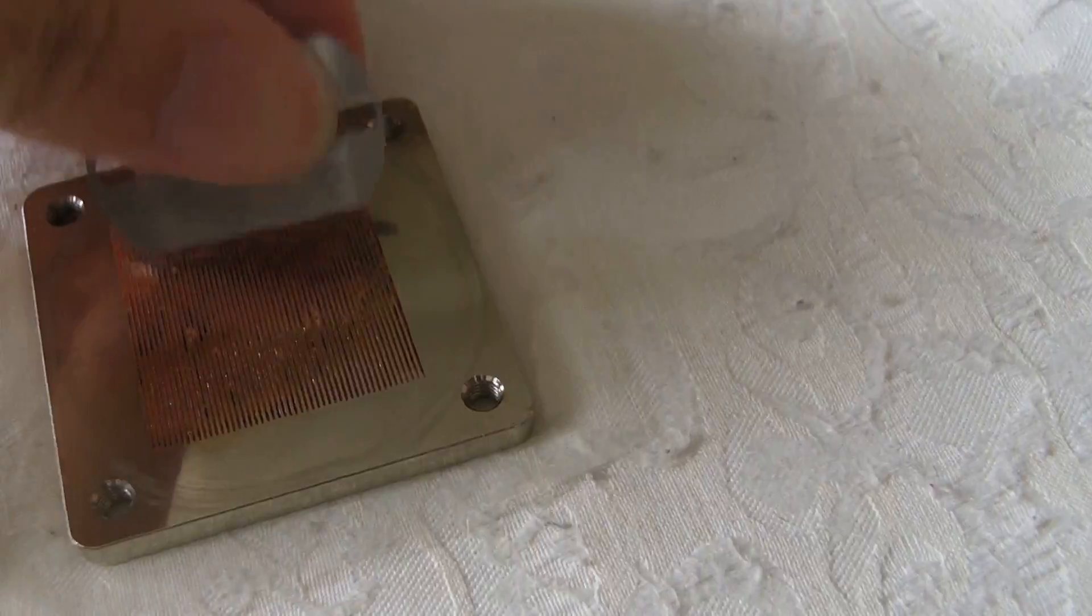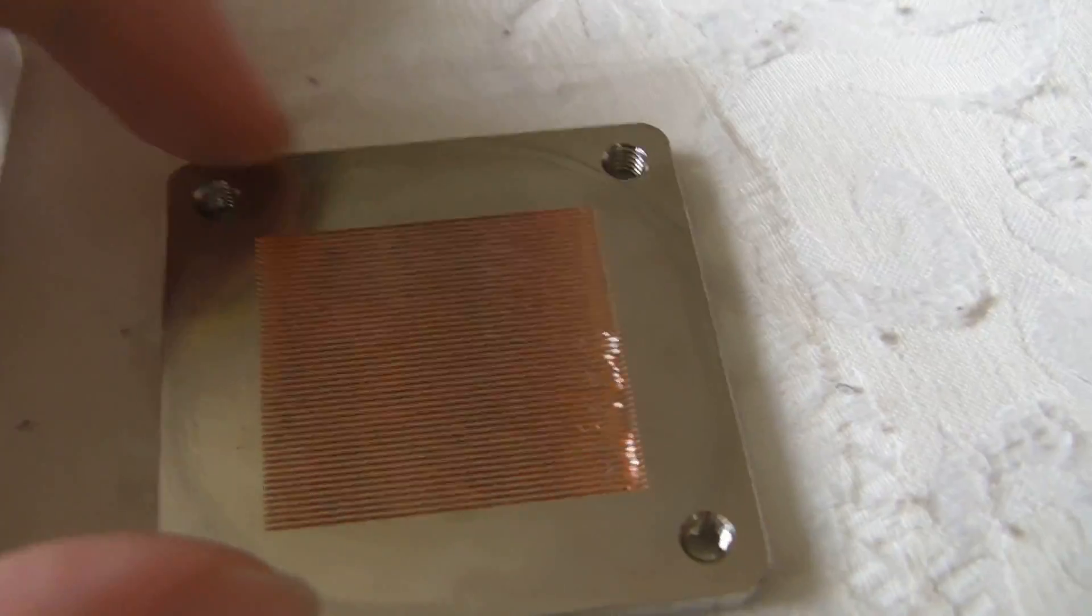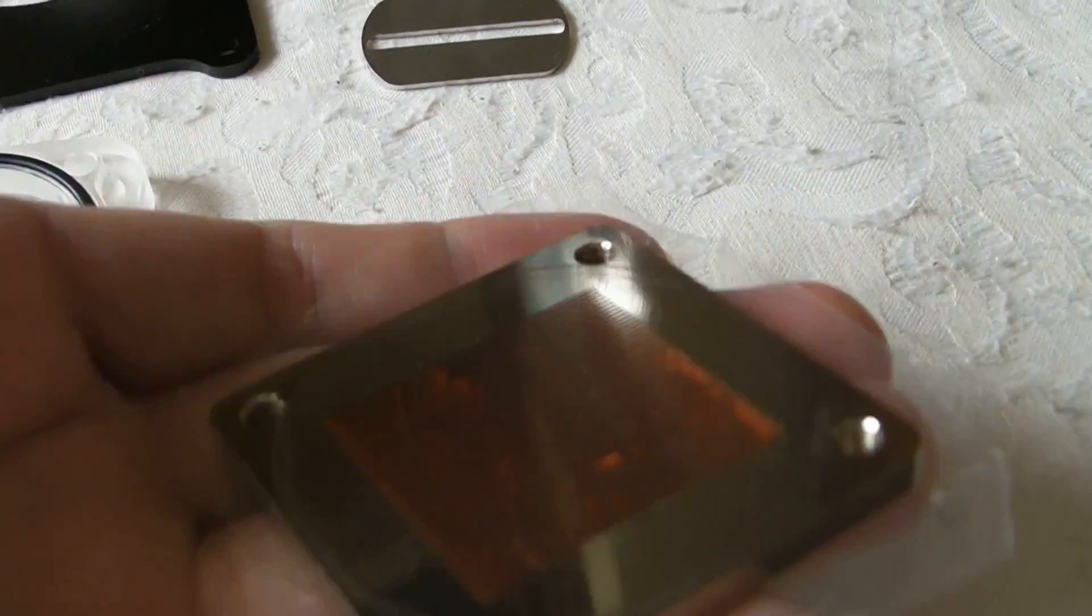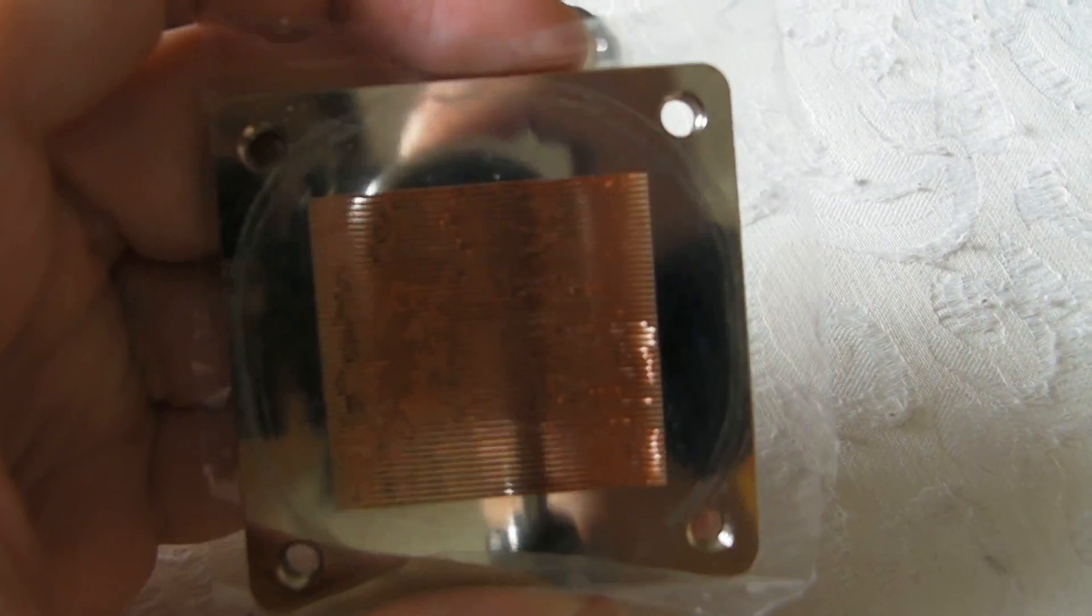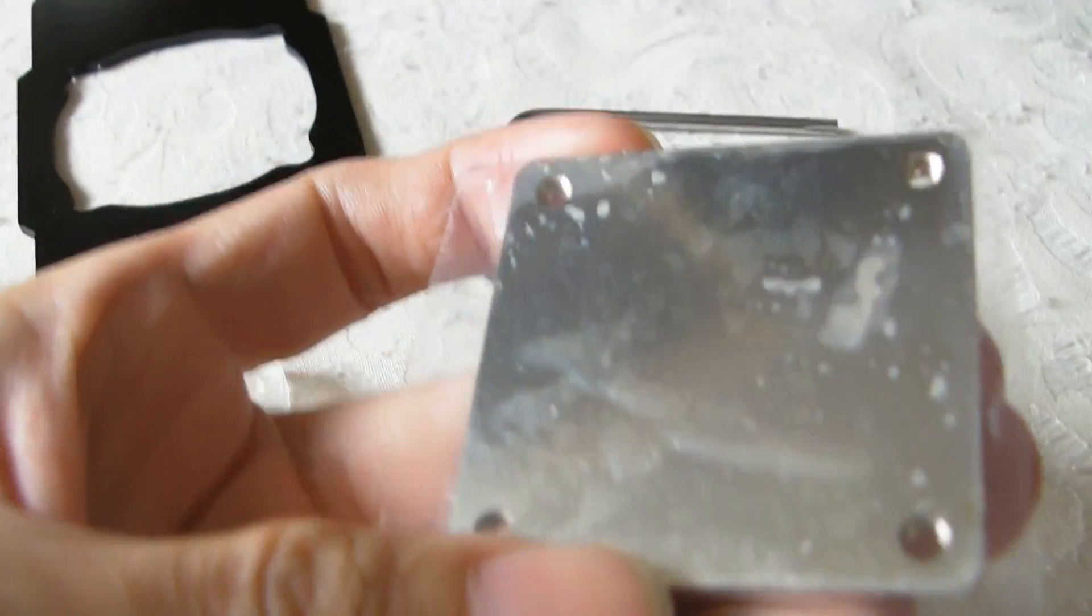Looking at the water block itself, it's heavy copper. I can feel the weight is pretty heavy. This is pure copper plated with nickel or silver. This is the back - I have not taken out the seal yet, but it's looking okay.